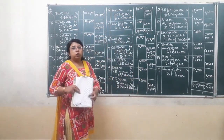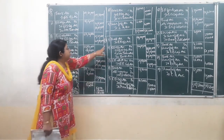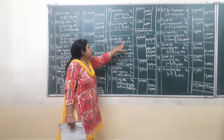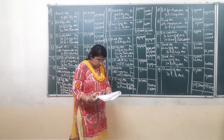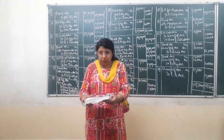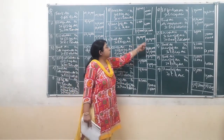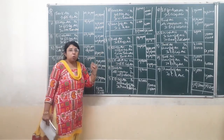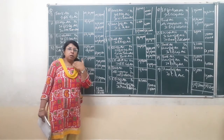So let us write the journal entries related to the transactions given. First, the amount received at the time of application: bank account is debited and equity share application account is credited. Applications received are for 9,00,000 shares at the rate of Rs. 10 per share including premium. So 9,00,000 multiplied by Rs. 10 comes to Rs. 90,00,000. The second entry is that equity share application amount is transferred to share capital. Excess application money is returned back and the remaining premium amount is transferred to securities premium account.